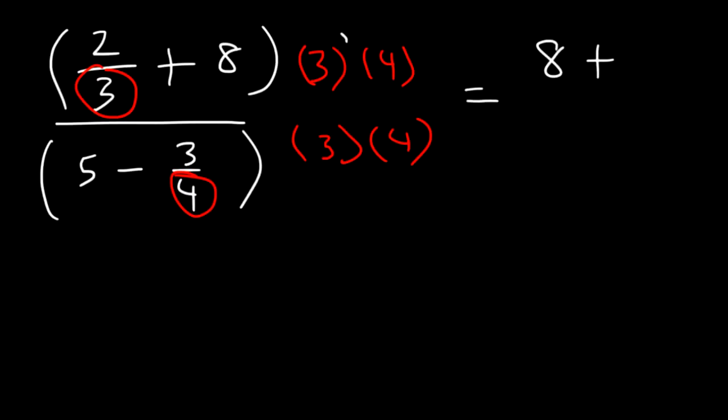Next, we have 12 times 8. 12 times 8, if you remember your multiplication tables, that's simply 96. You can do it one step at a time. You can say 8 times 4 is 32. 32 times 3 is 96.